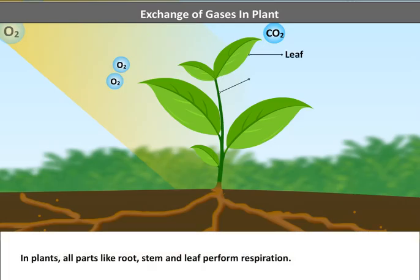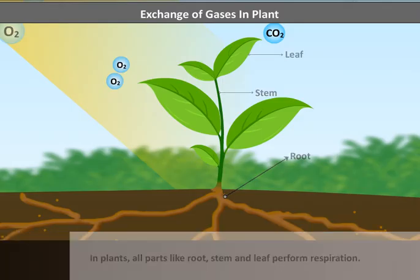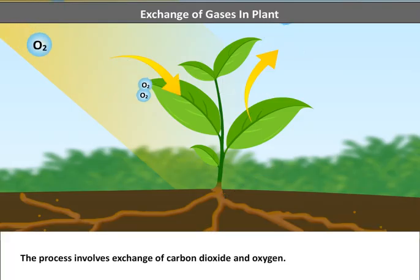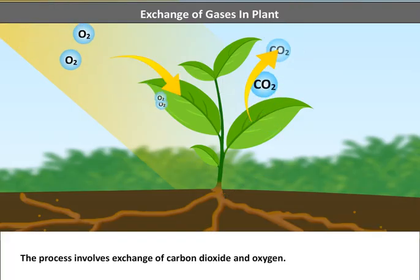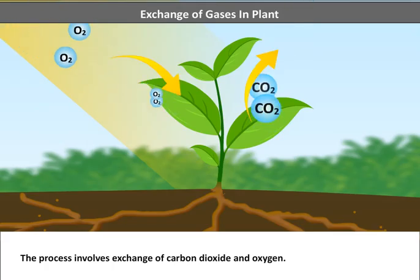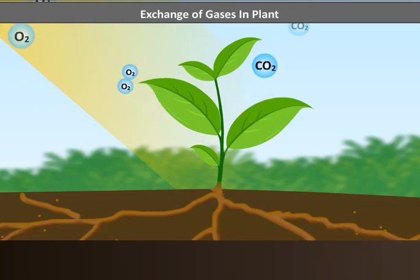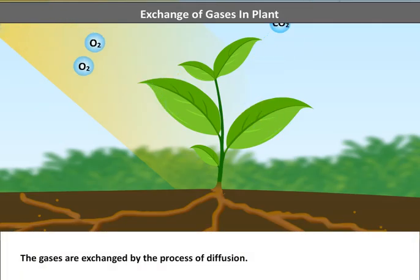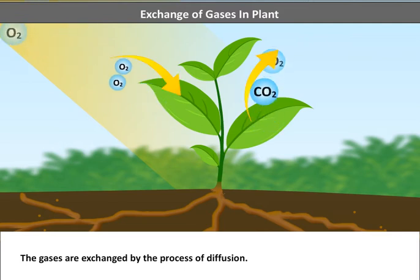In plants, all parts like root, stem and leaf perform respiration. The process involves exchange of carbon dioxide and oxygen. The gases are exchanged by the process of diffusion.